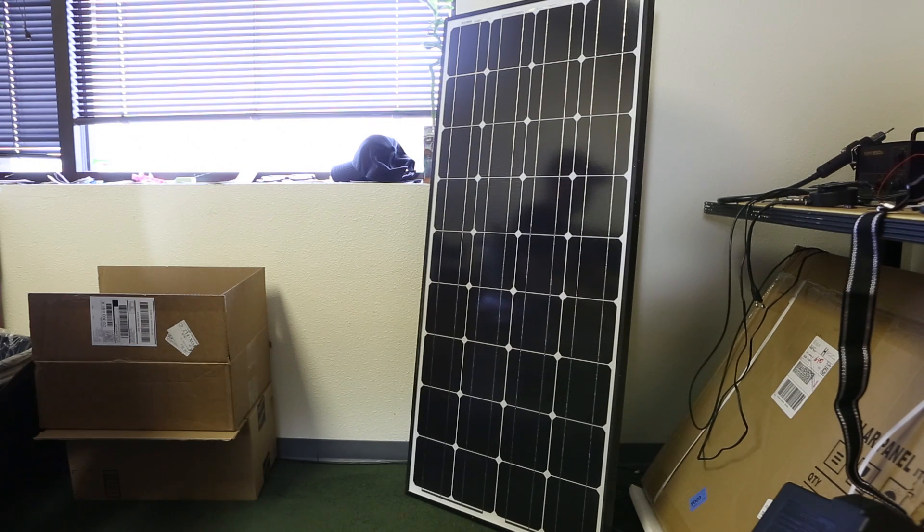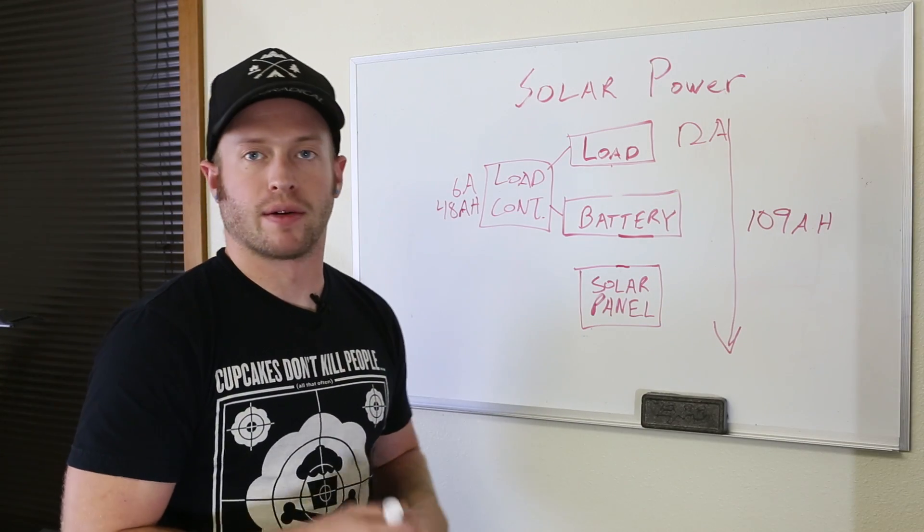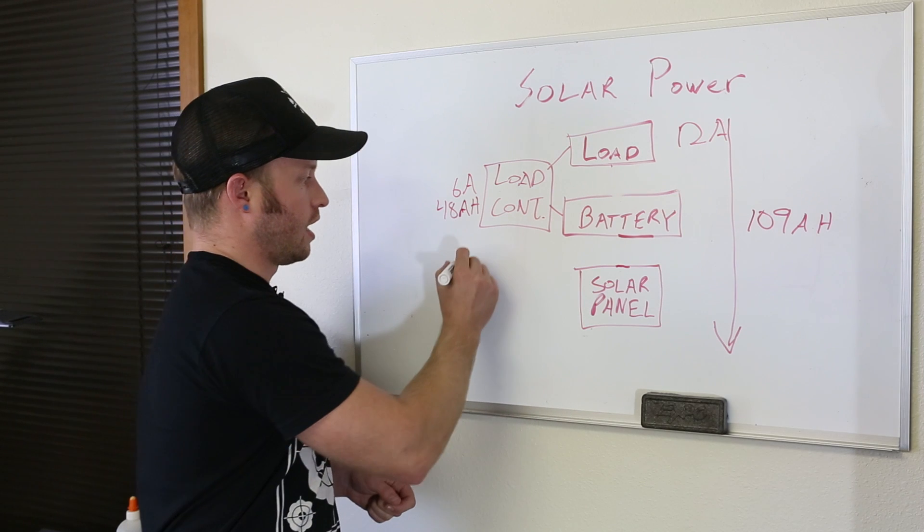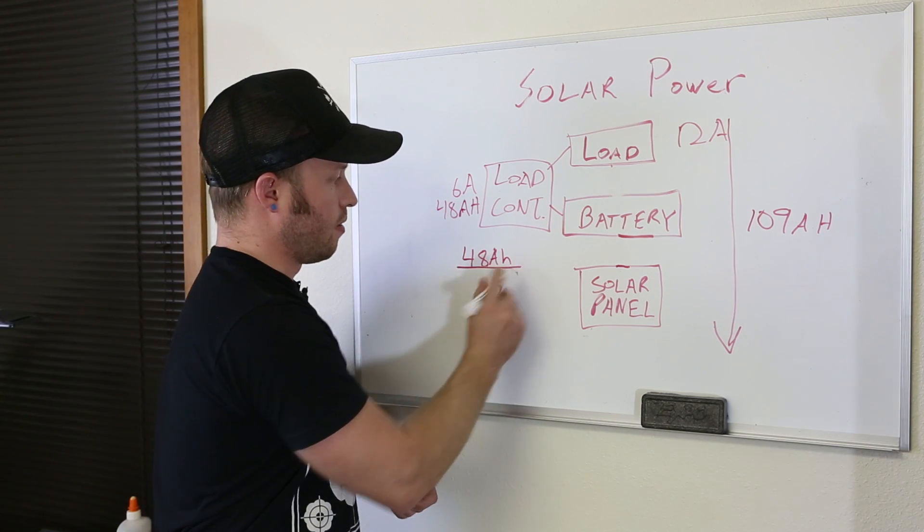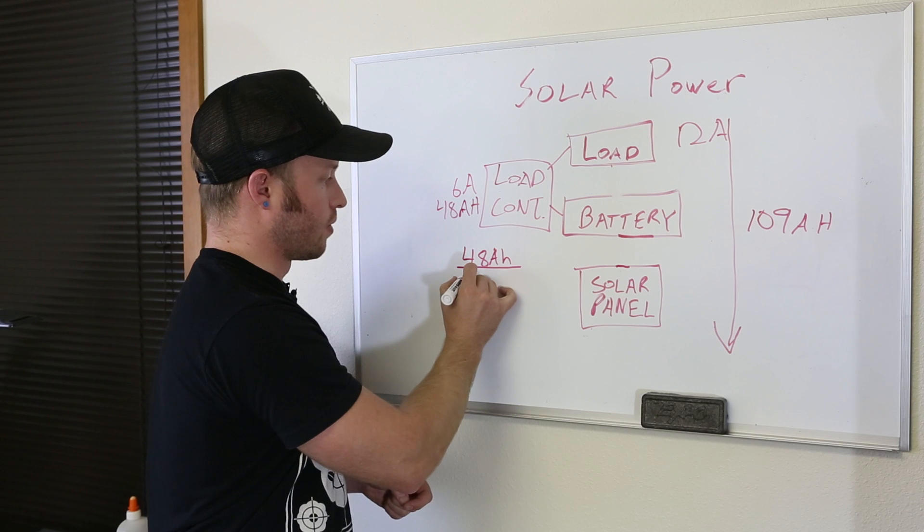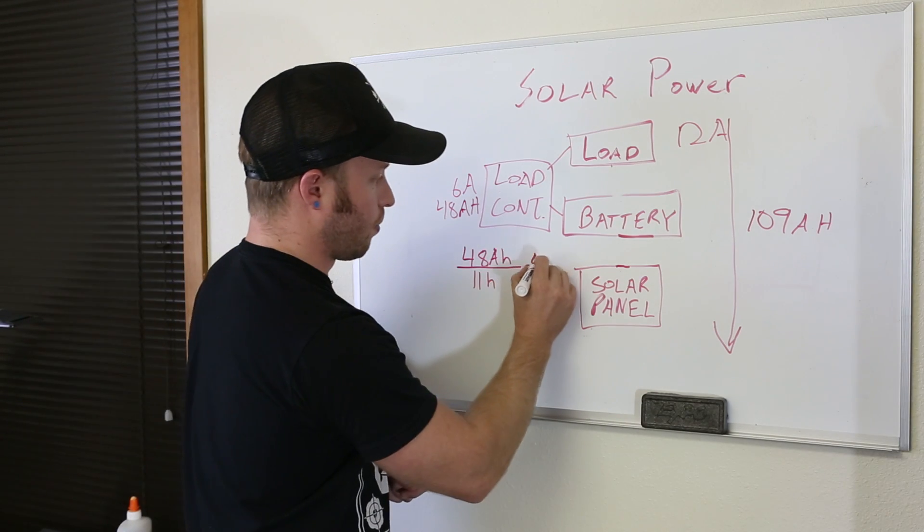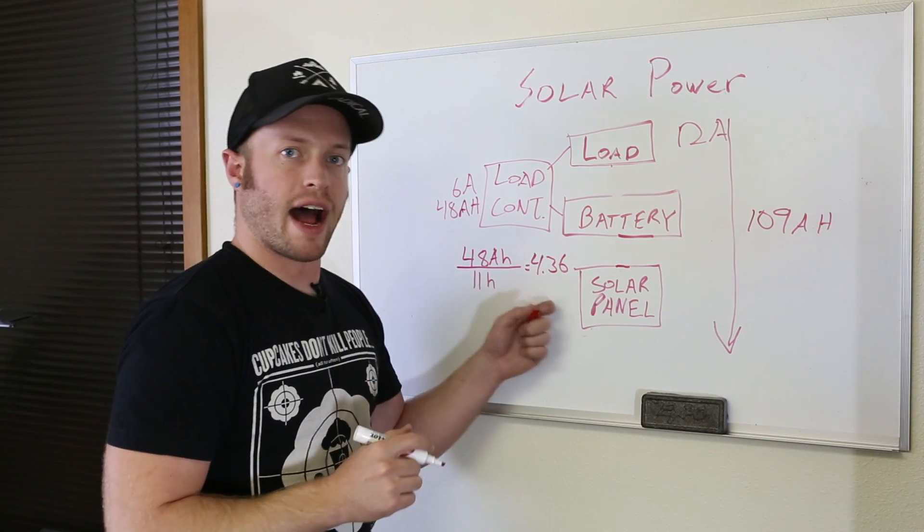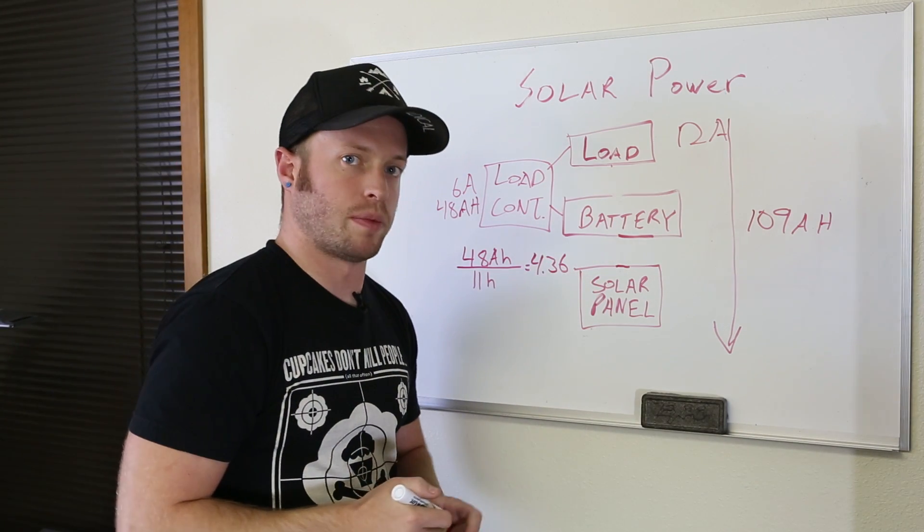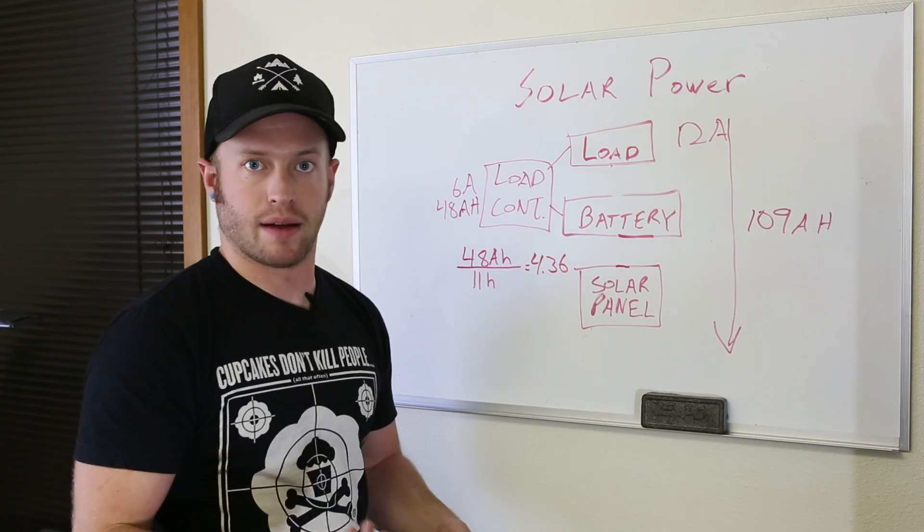So now I need to choose a solar panel that's going to charge for about 11 hours of sunlight and put all that 48 amp hours back into the system. For that calculation, I take what I require and divide it by how much sun I'm going to have. So 11 hours of sun equals about 4.36 amps per hour of sun. So I need a solar panel that is going to deliver charge at more than 4.36 amps.